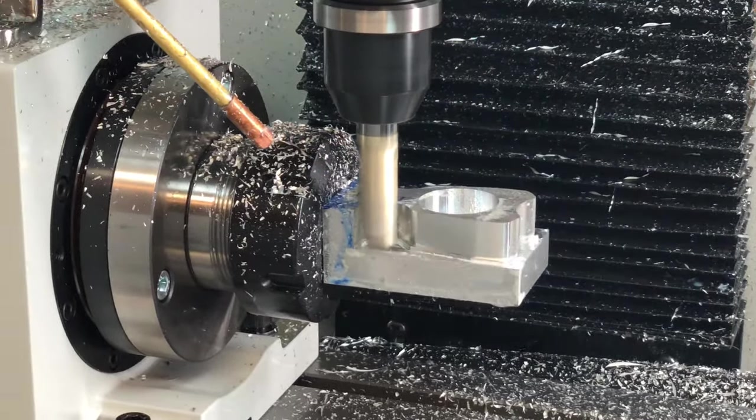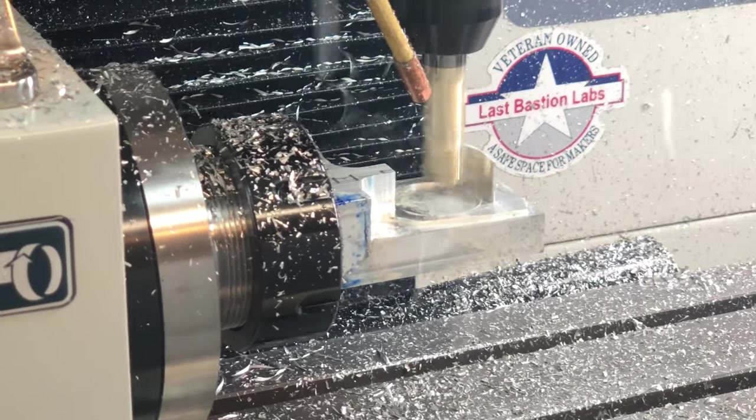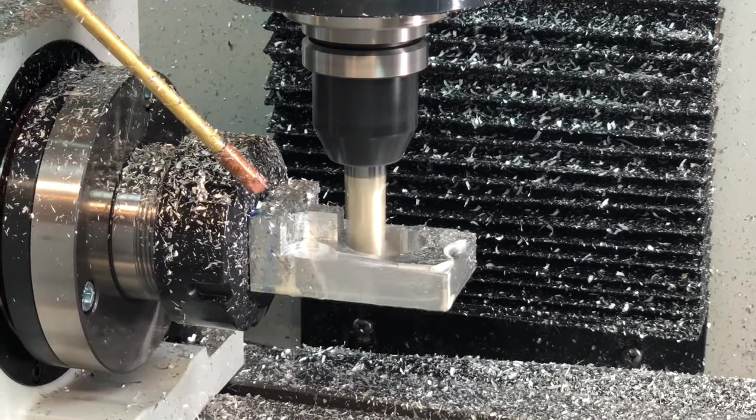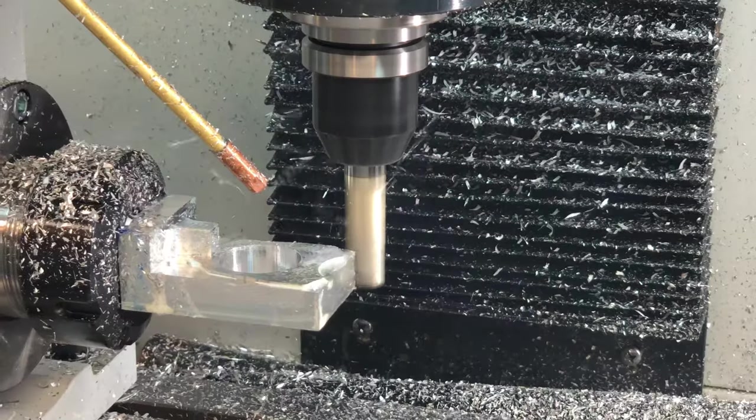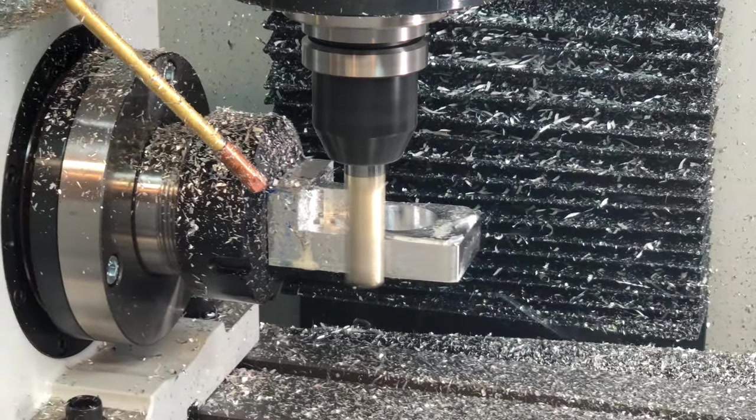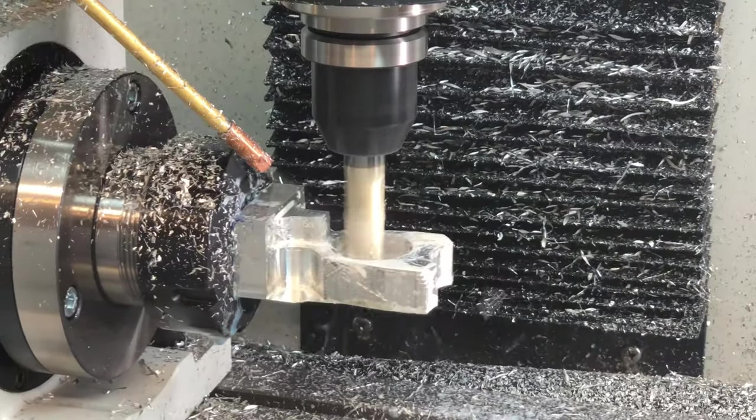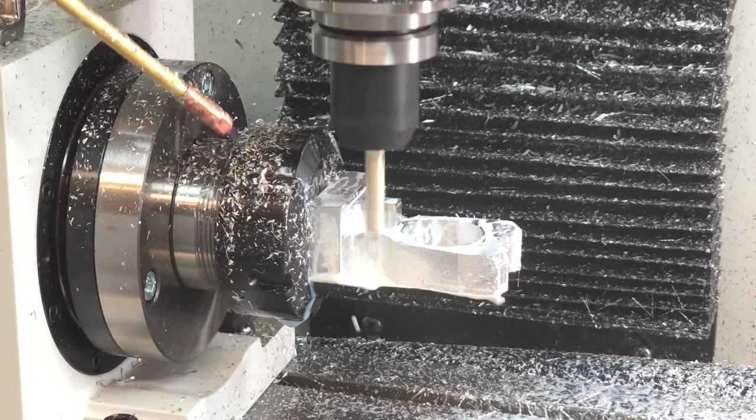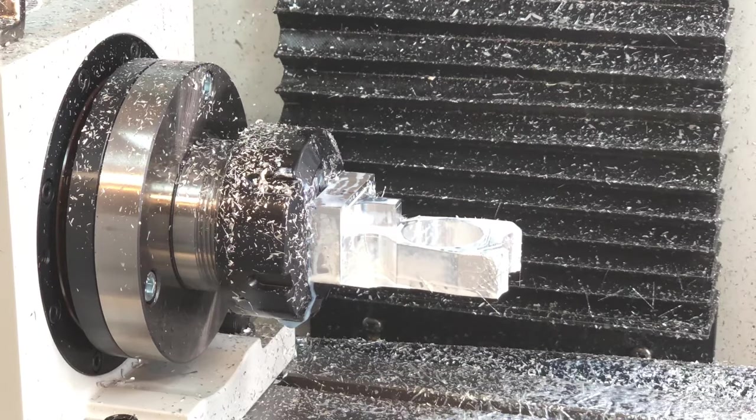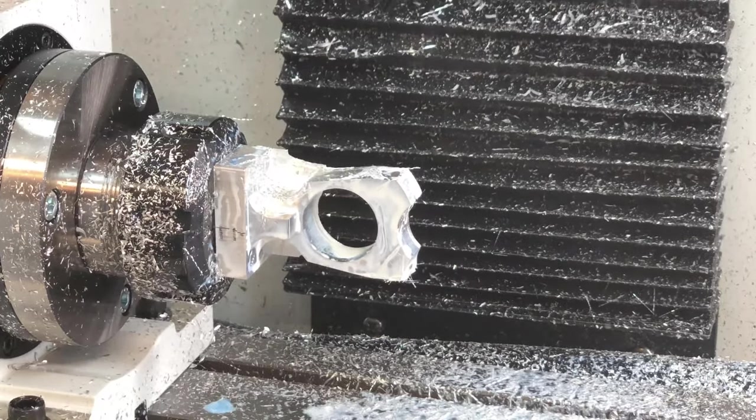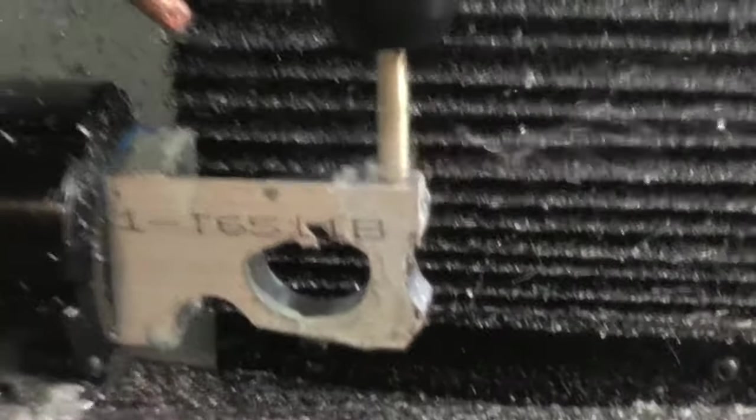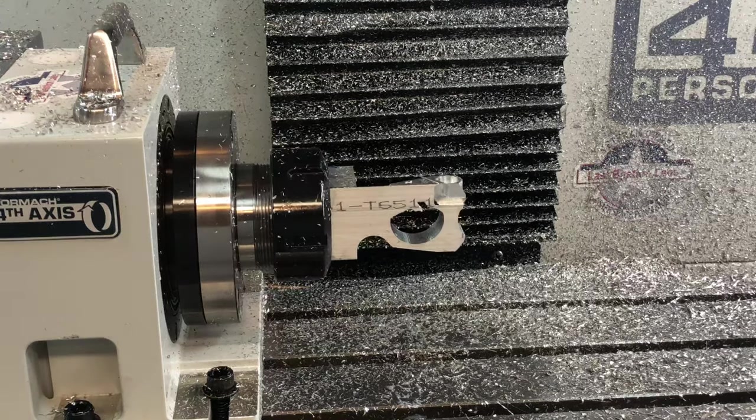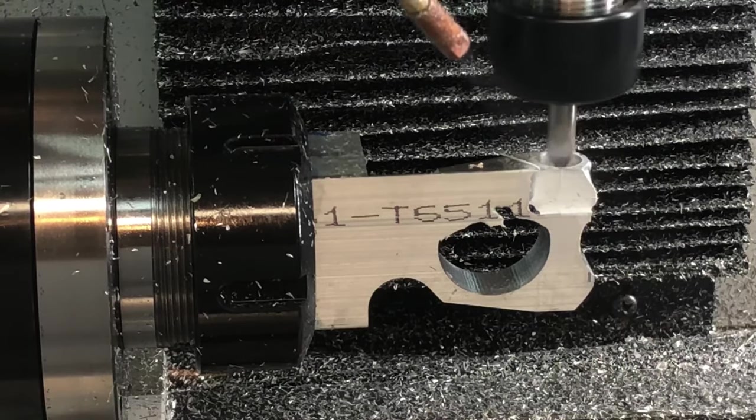Wow, look at those chips fly. The goal here is to remove the bulk of the material, but still leave some support material. There was a little chatter on the very end of the part. If I ran this part again, I would go with a thicker stock so I had more material at the bottom. As you can see in the video, it's a little thinner than I would like on the bottom.